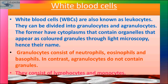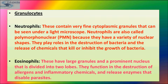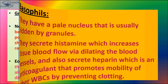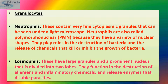WBCs are divided into granulocytes and agranulocytes. Granulocytes consist of neutrophils, eosinophils, and basophils. Neutrophils contain very fine cytoplasmic granules visible under a light microscope. They are also known as polymorphonuclear (PMN) cells because they have a variety of nuclear shapes. They play a role in destruction of bacteria and release chemicals that kill or inhibit bacterial growth.